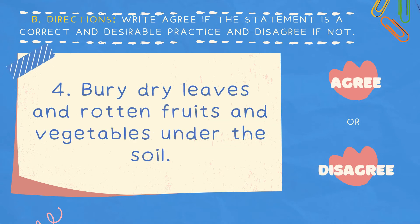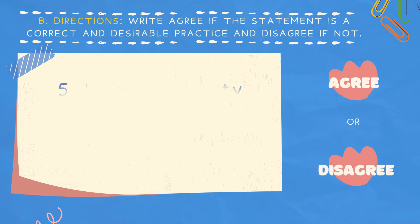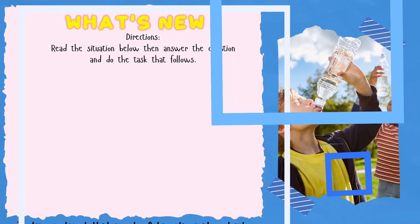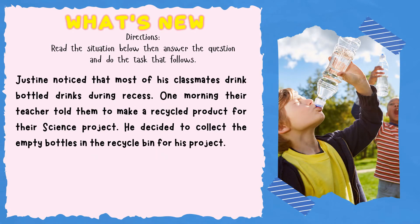Number 4: Bury dried leaves and rotten fruits and vegetables under the soil. Number 5: Use the empty mayonnaise jar as candy jars or food storage jars. Agree or disagree?